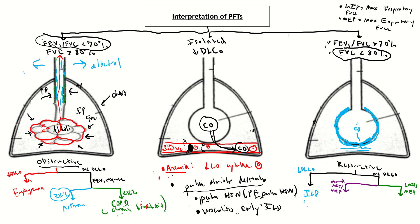Something people sometimes forget is heart failure. Heart failure can be hard to differentiate from ILD — both can show ground-glass opacities and intralobular thickening on CT, and both can cause hypoxia. Heart failure fluid flooding the alveoli creates stiffer lungs, causing a restrictive deficit, and also decreases diffusion across the alveolar-capillary membrane, reducing DLCO. So heart failure stays in your differential when you see a restrictive deficit with reduced DLCO.